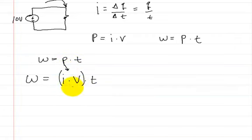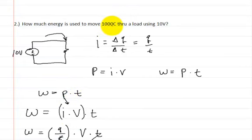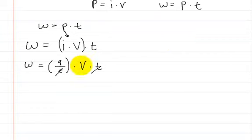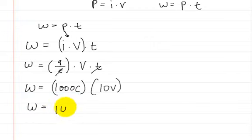Now we substitute in for current: current equals charge divided by time. So work equals charge divided by time, multiplied by voltage, multiplied by time. Time cancels out, leaving a much nicer equation. We know charge is 1,000 coulombs and voltage is 10 volts. So energy equals 1,000 coulombs times 10 volts, which gives us 10,000 — the energy equals 10 kilojoules.